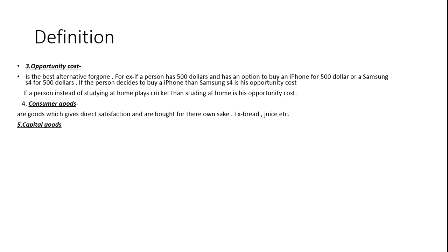What are capital goods? Capital goods are goods which are not bought for their own sake, but for the sake of producing other goods. For example, the pen can be considered a capital good because it does not give direct satisfaction but is used to produce something else. Machinery is another example — machinery does not give direct satisfaction to any consumer, but it is used to produce consumer goods.